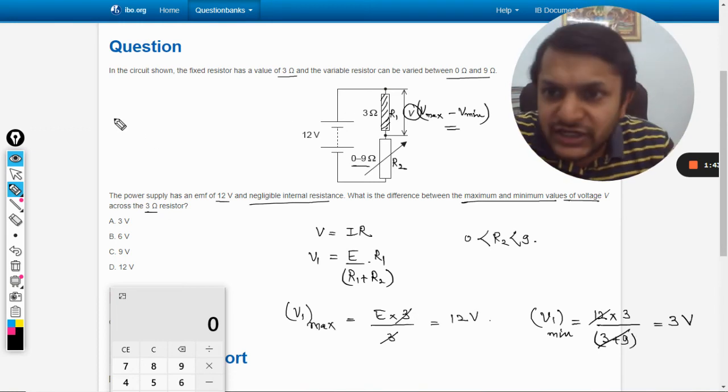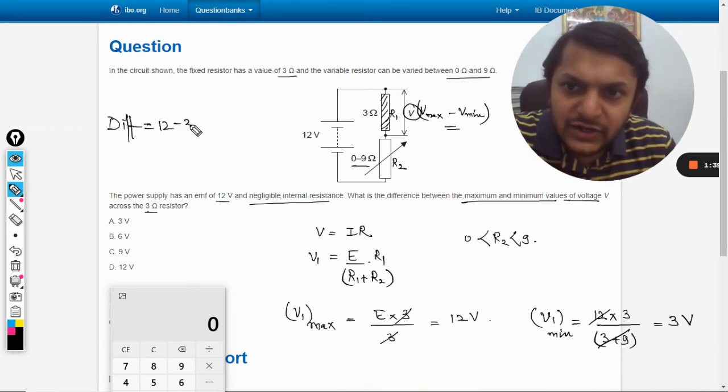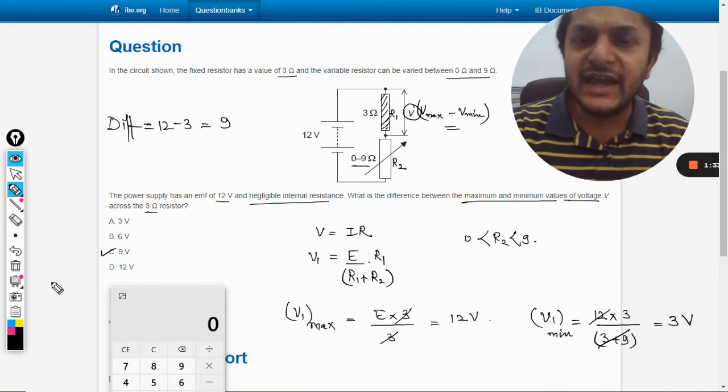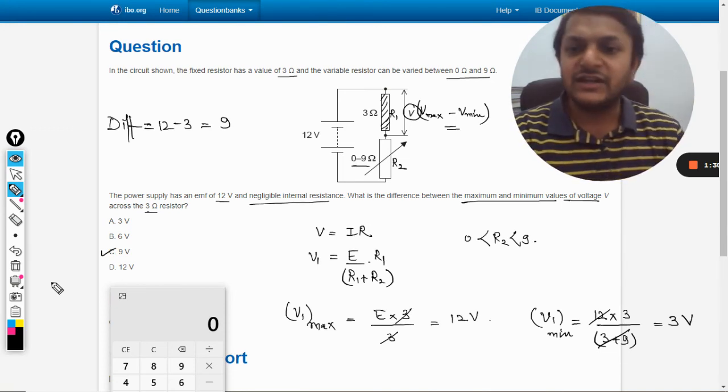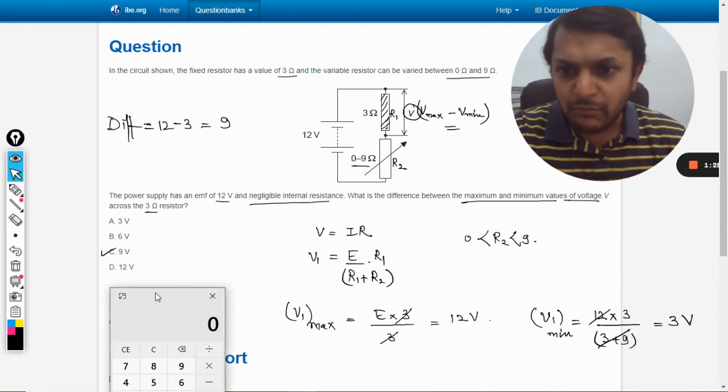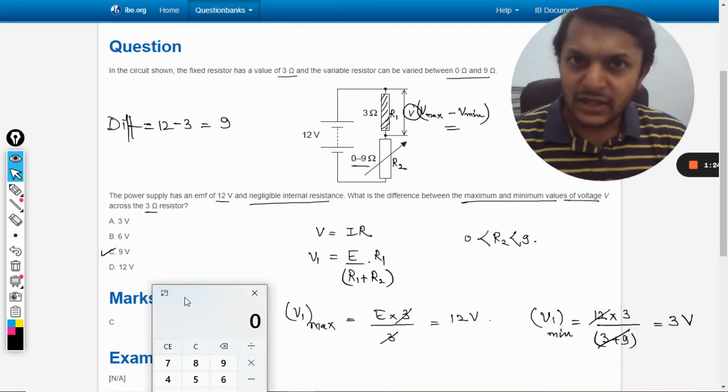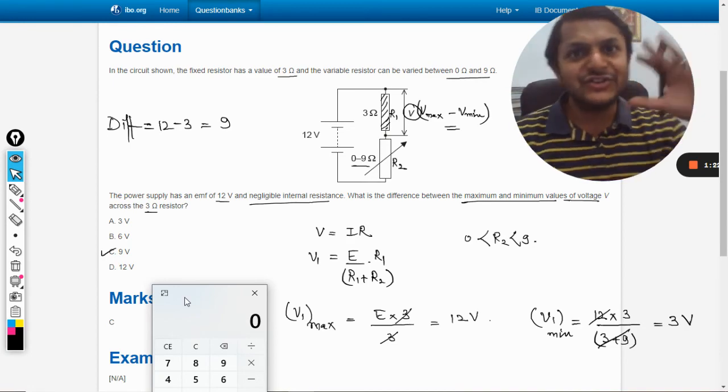So the difference will be 12 minus 3, that is 9 volts. So checking the options, we get C should be the correct answer. We have picked it. Let us verify from our mark scheme, and yes, the answer is C. So with this, all the best, bye.